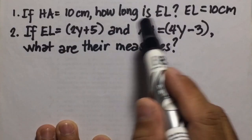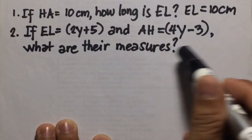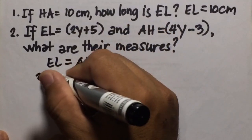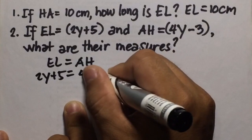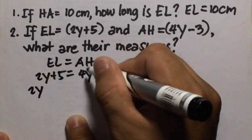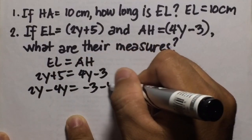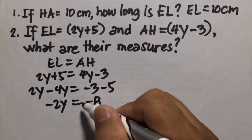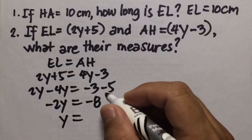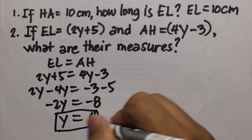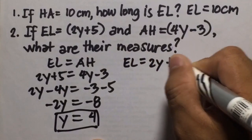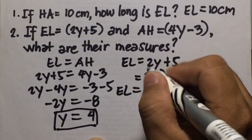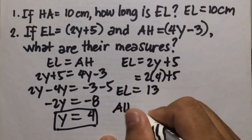Number two: if E-L equals 2Y plus 5 and AH equals 4Y minus 3, what are their measures? Setting them equal: 2Y plus 5 equals 4Y minus 3. Combining like terms: 2Y minus 4Y equals negative 3 minus 5, giving negative 2Y equals negative 8. Dividing both sides by negative 2, Y equals 4. So E-L equals 2 times 4 plus 5 equals 8 plus 5 equals 13. Since E-L equals AH, AH is also 13.